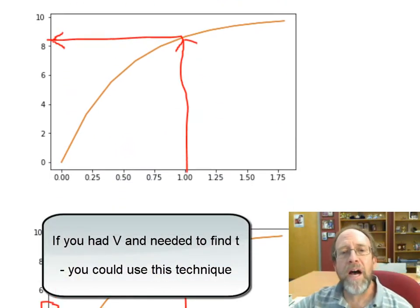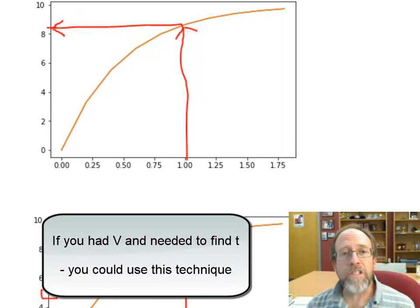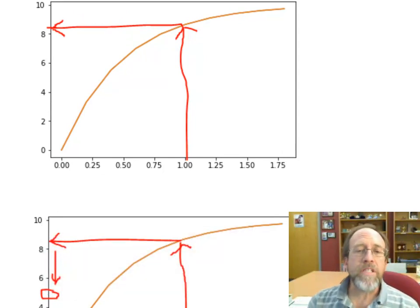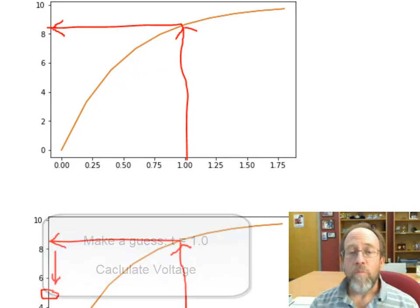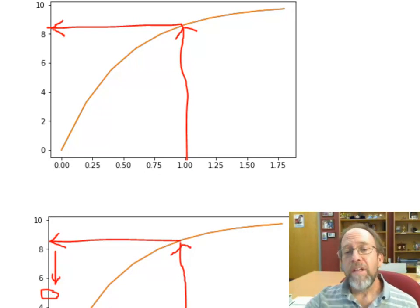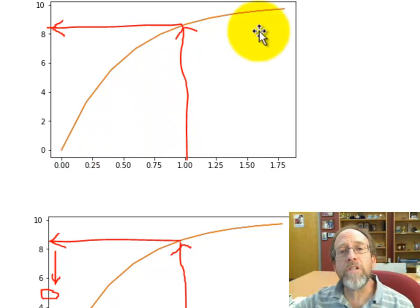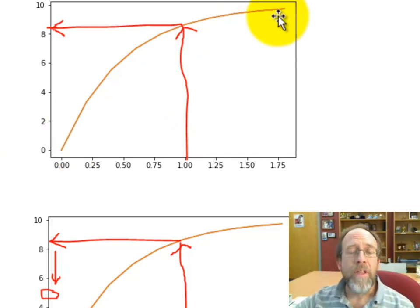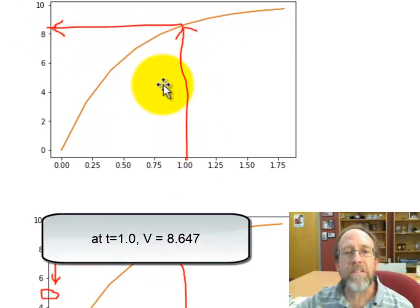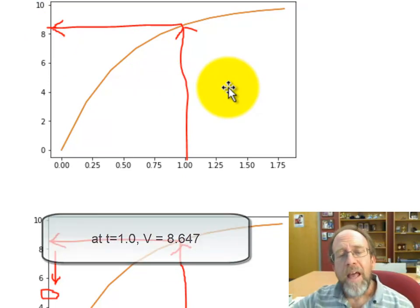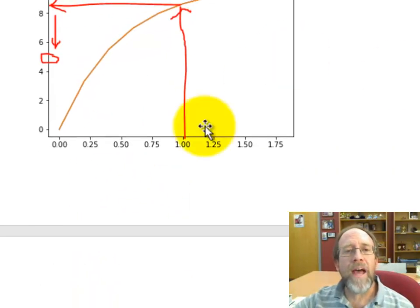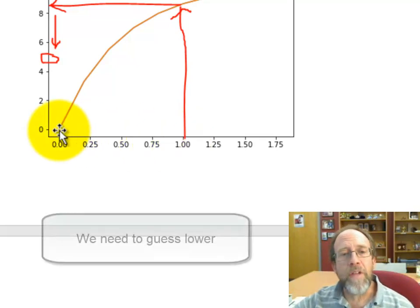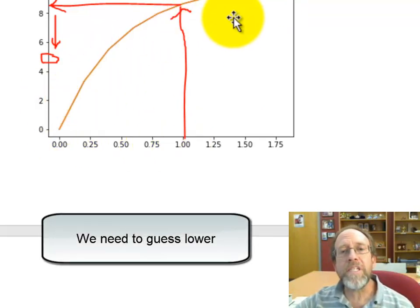Let's look at a numerical technique that might be useful here. We already have a function that returns the voltage given a time. Let's say we want to find out when the voltage is five. We can just guess. From the plot, between zero and two seconds, the voltage goes from zero to ten. Let's pick something midway at one and calculate the voltage. That voltage was a little bit over eight — so we can eyeball it. We're thinking about how the technique will work.